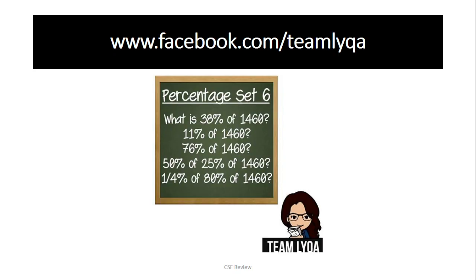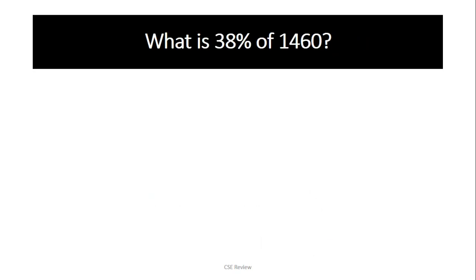You can do it a number of ways. Let's start with the first question: 38% of 1460. The technique with percentages is — if you write 38%, that is two decimal places, two dots, starting here. So that is 0.38.